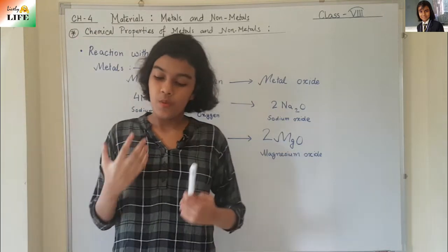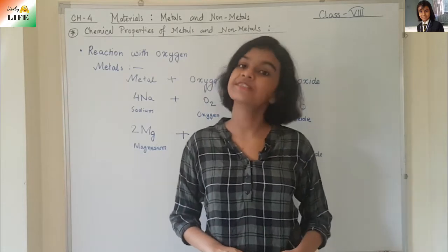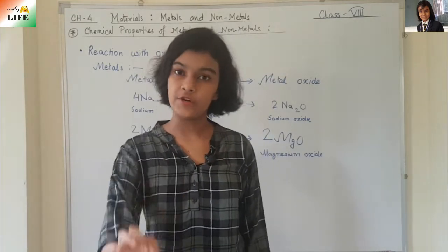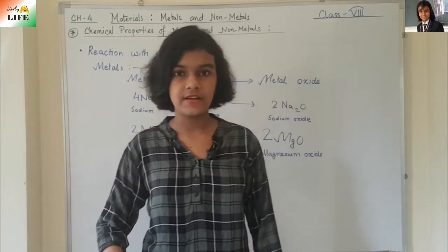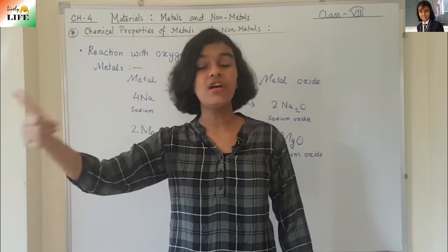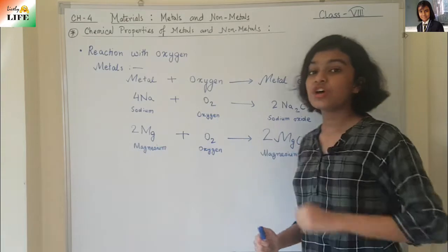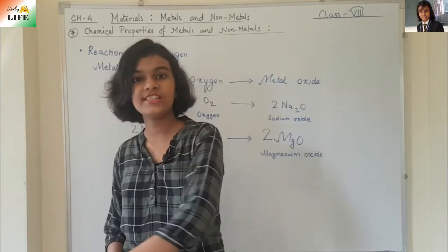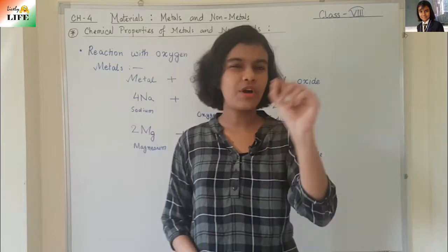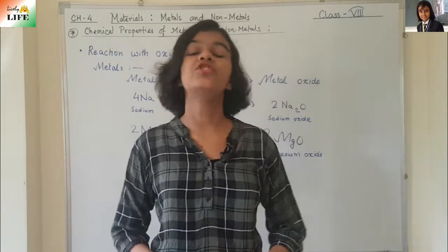If you have ever seen, when an iron material is kept in open air, a reddish brown substance is formed in it — it is known as rust. It actually destroys the iron; the iron gets eaten away by air, water, etc., and it forms rust. This is also reacting with oxygen, because when iron comes in contact with oxygen it forms rust. Same goes with copper — when copper comes in contact with oxygen, it forms a green coating. Rust is actually iron oxide, and that green coating is copper oxide.